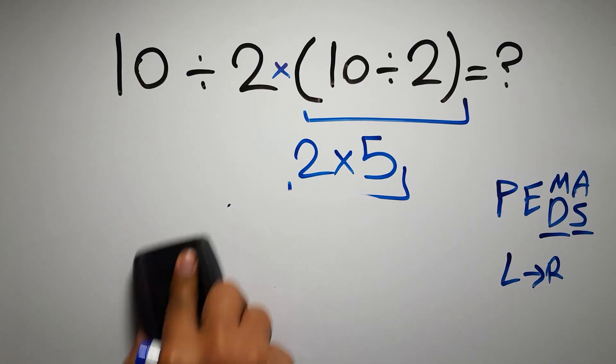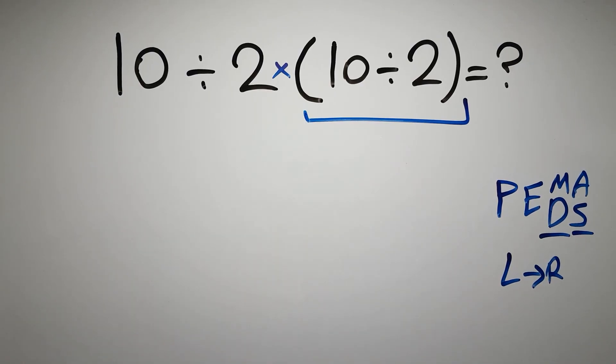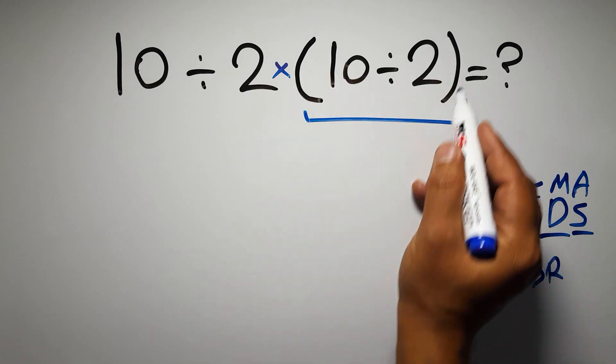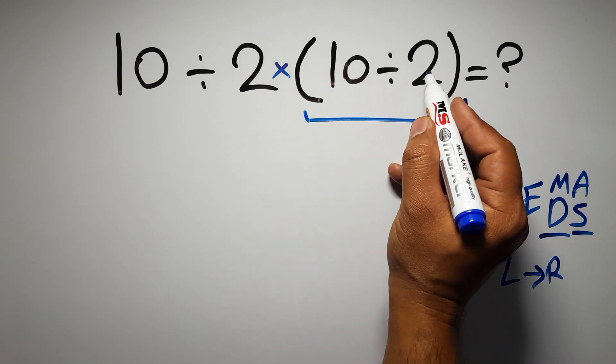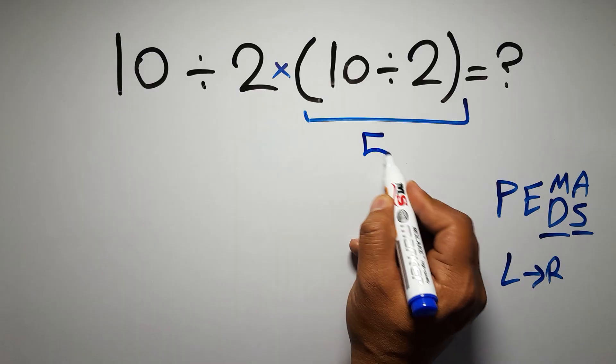So first this parentheses. Inside these parentheses, we have 10 divided by 2, which gives us 5.